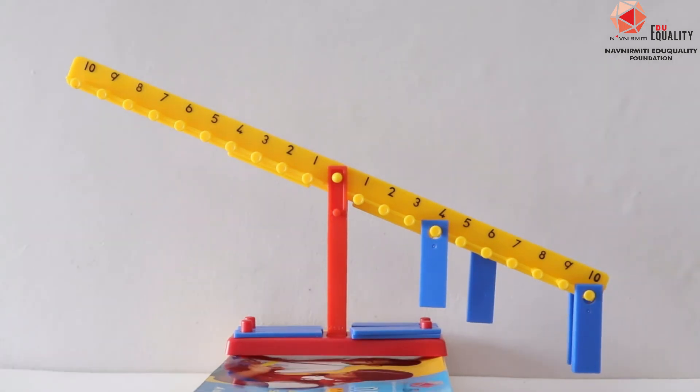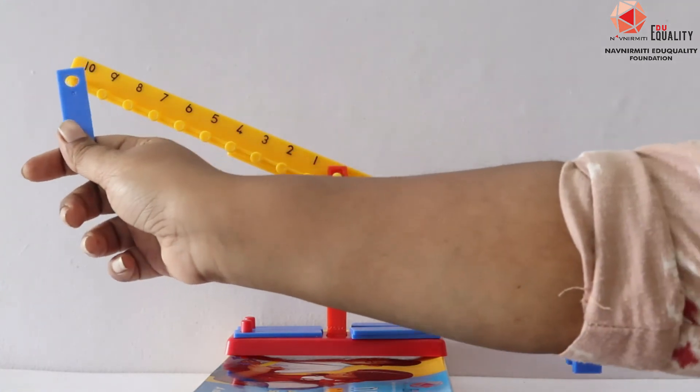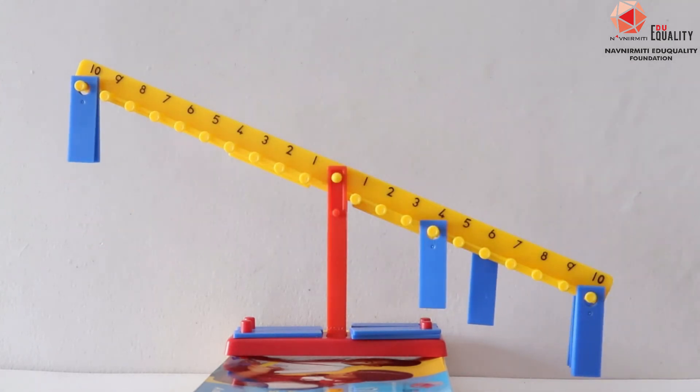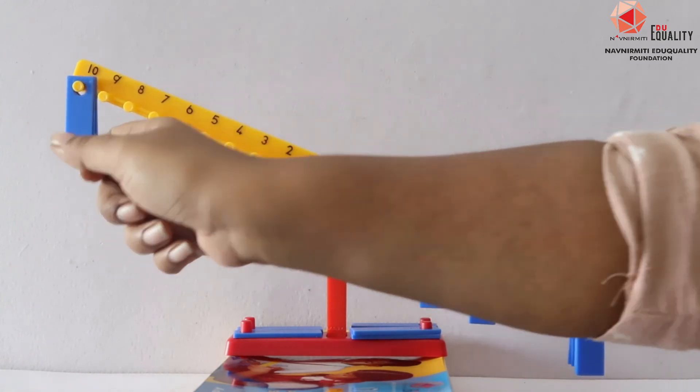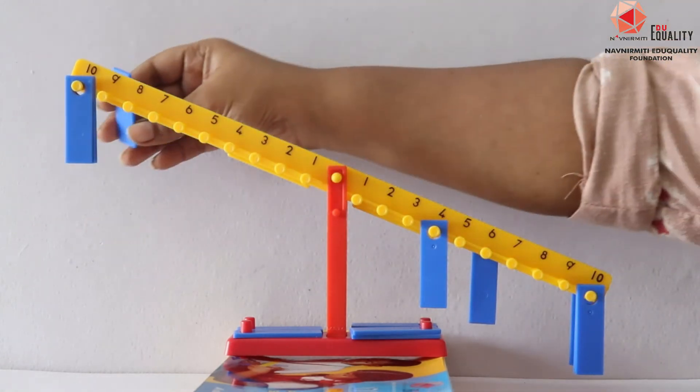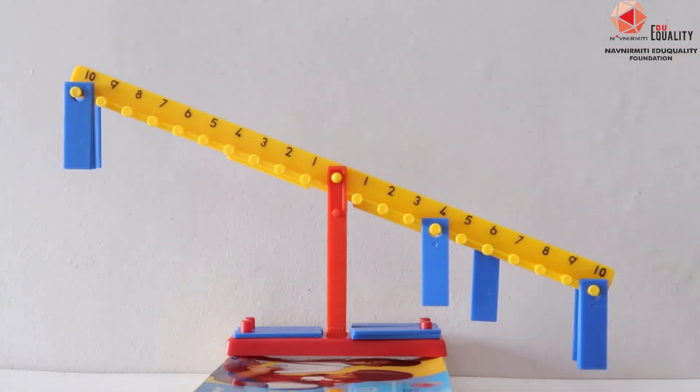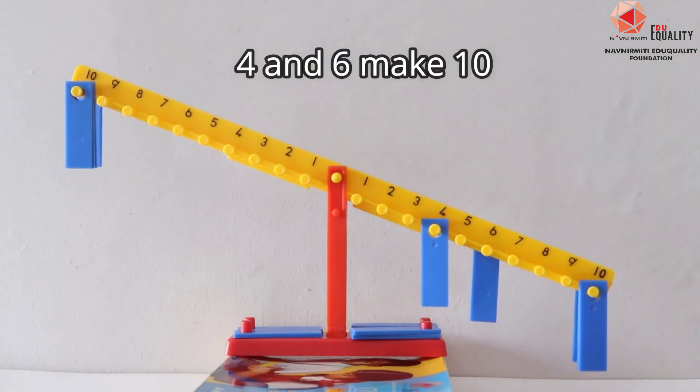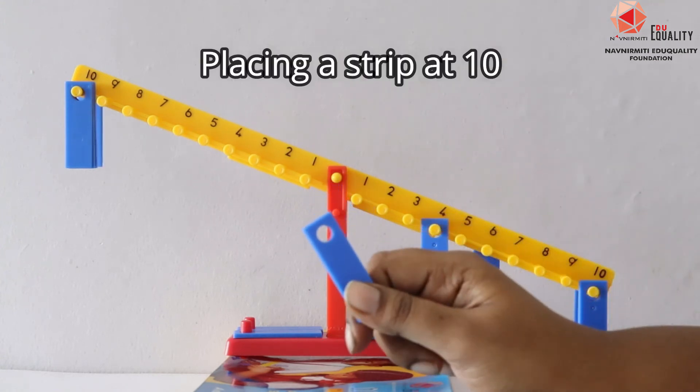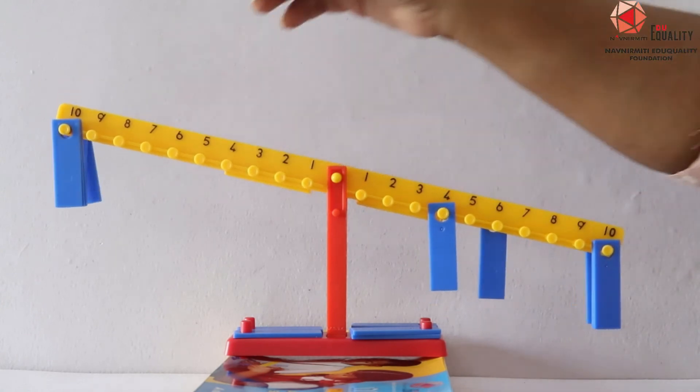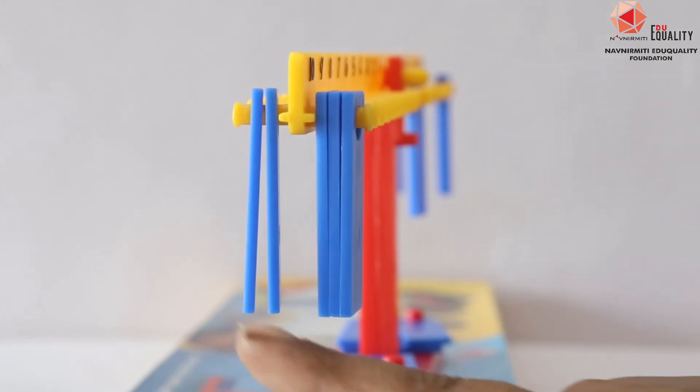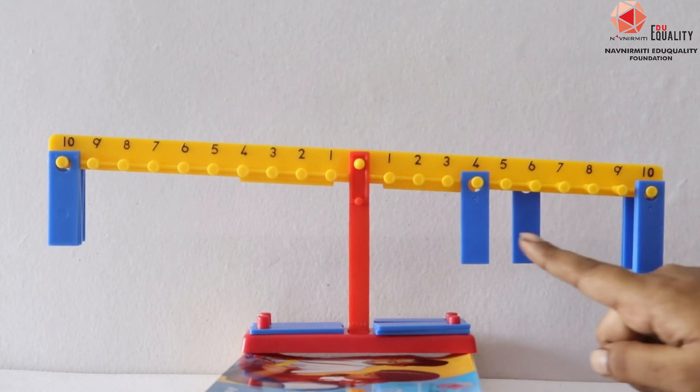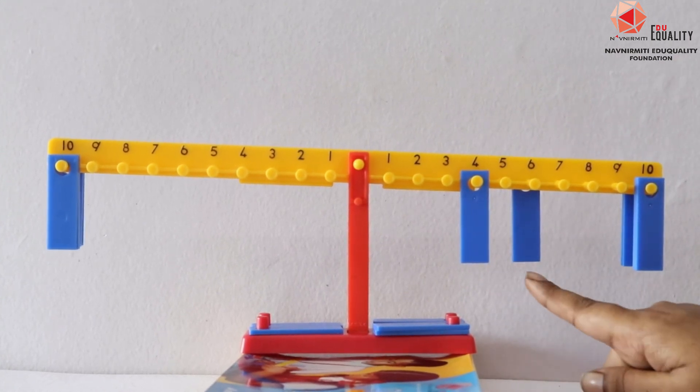As we can see that there are 4 strips at 10 on the right arm. So to balance it, let me place strips on the left arm at number 10. I have put 5 strips on the left arm at position 10 and it has got balanced. So I can say that 24 plus 26 gives me 50.